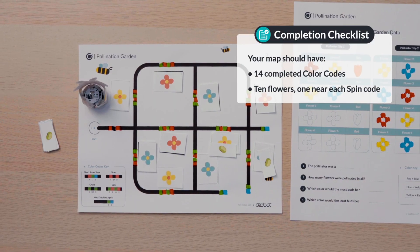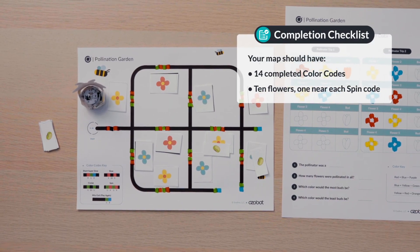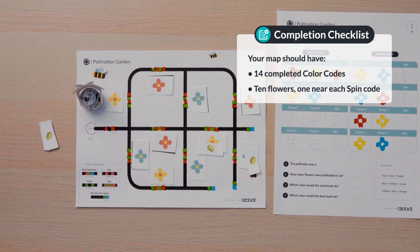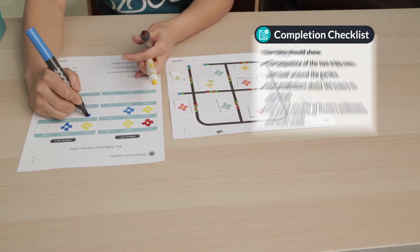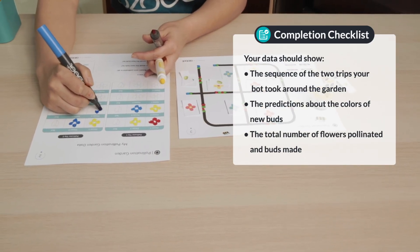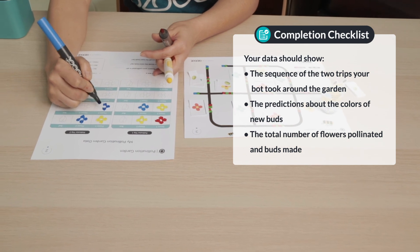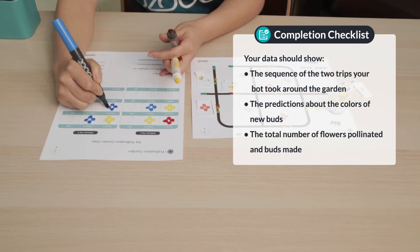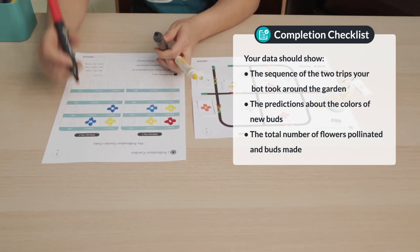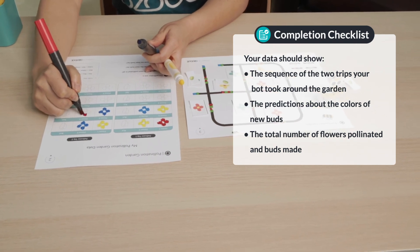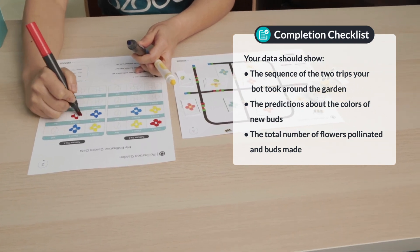Your map should have 14 completed color codes, 10 flowers, one near each spin code. Your data should show the sequence of the two trips your bot took around the garden, the predictions about the colors of your new buds, and the total number of flowers pollinated and buds made.